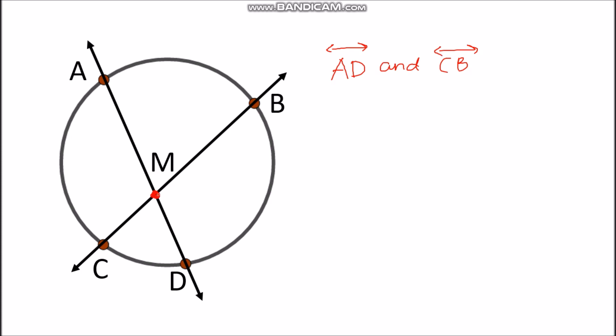Notice that point M is inside the given circle, so it is in the interior of the circle. There are angles formed by these secants. The first is angle CMD, and the other one is angle AMB. Notice that these two angles are vertical angles.